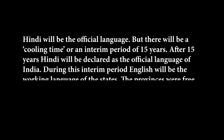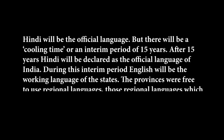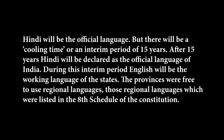A compromise solution was worked out by the constituent assembly. Hindi would be the official language, but there would be a cooling or interim period of 15 years. After 15 years, Hindi would be declared the official language. During this interim period, English would be the working language of the state. The provinces were free to use regional languages enlisted in the 8th schedule of the constitution.